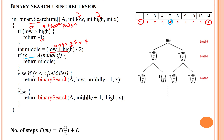For example, we are searching for the value 10. We check if x equals a[middle]: a[4] is 7, so 10 equals 7 is false — this block does not execute. Then we check else if x less than a[middle]: 10 less than 7 is also false, so this block also does not execute.